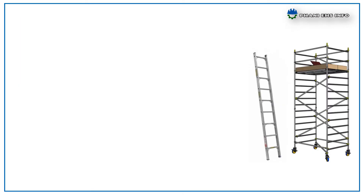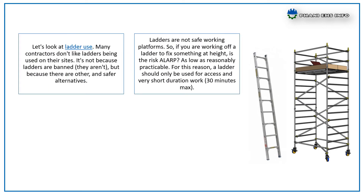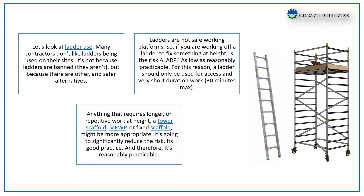Let me explain the ALARP risk management principle with one example — ladder use. Many contractors don't like ladders being used on their sites, not because ladders are banned, but because there are safer alternatives. Ladders are not safe working platforms, so if you are working off a ladder to fix something at height, the risk is significant. For this reason, ladders should only be used for access and very short duration work — a maximum of 30 minutes. Anything requiring longer or repetitive work at height, a tower scaffold, mobile elevated working platform, or fixed scaffold might be more appropriate, significantly reducing the risk. This is good practice and therefore reasonably practicable.